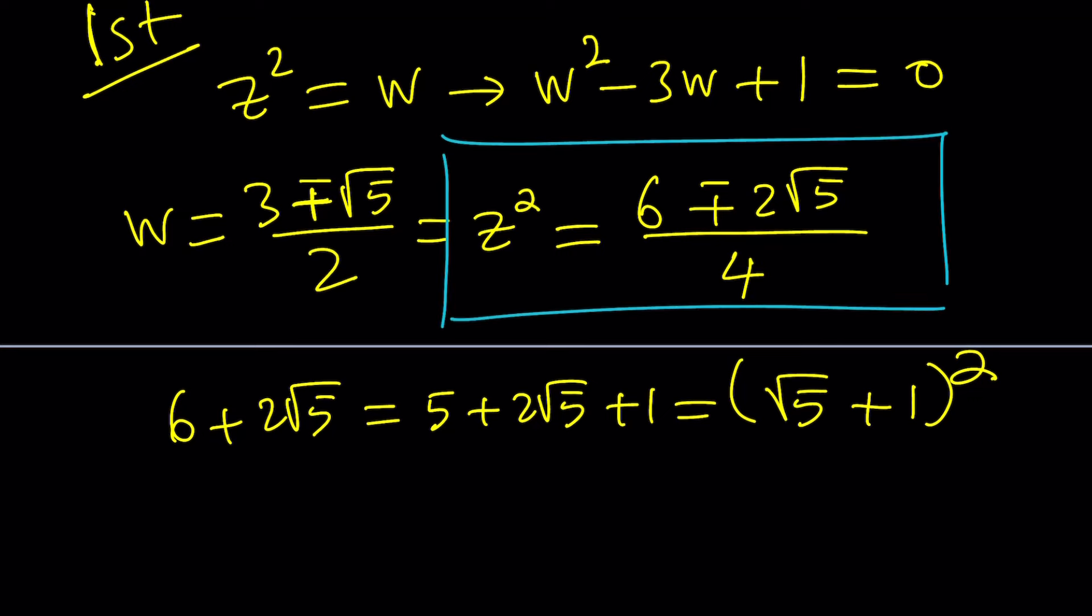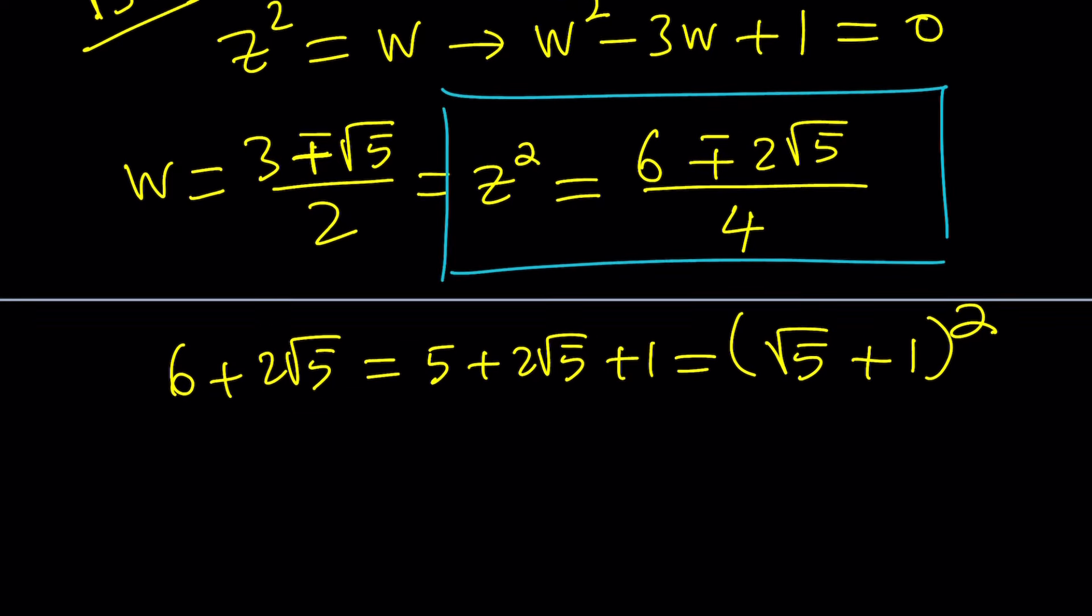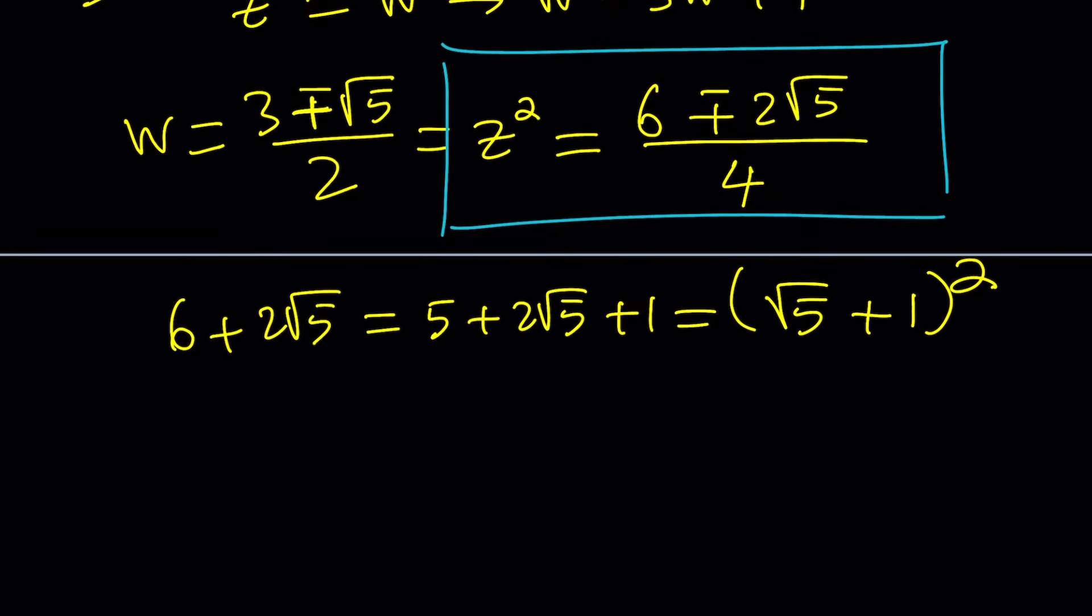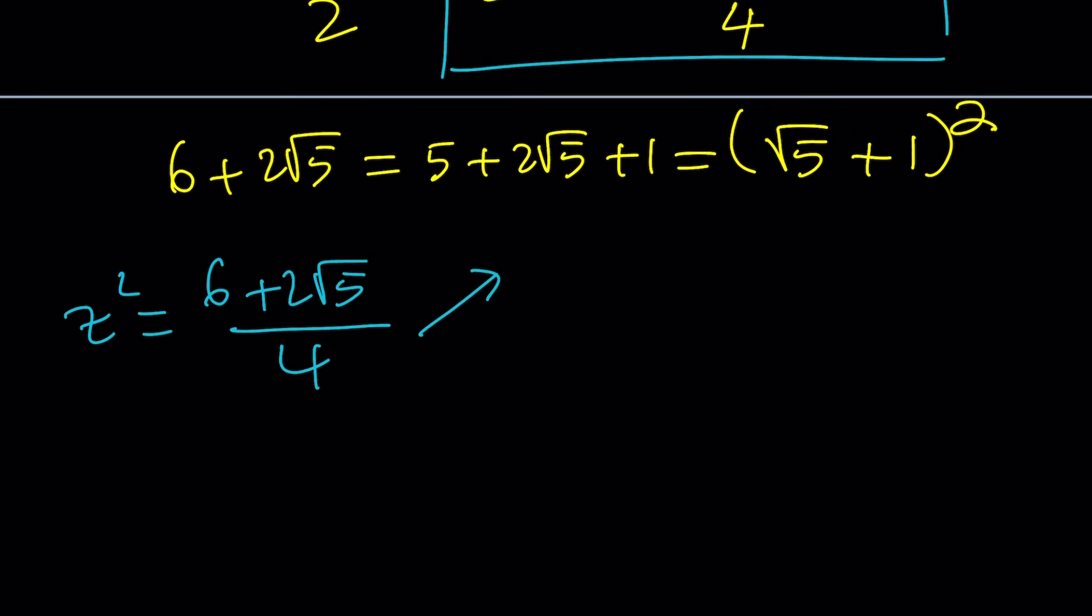We've got to look at it separately because we're going to have two solutions from each. If z squared is equal to 6 plus 2 root 5 over 4, let's go with the plus sign first.